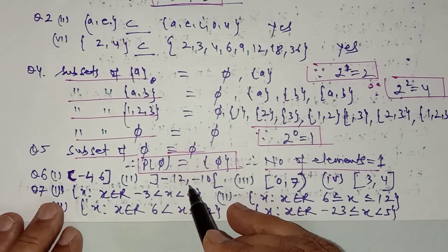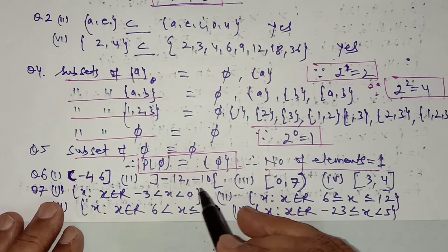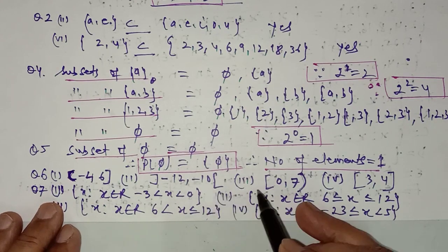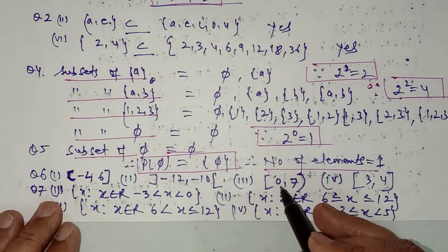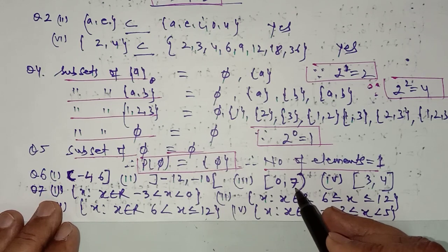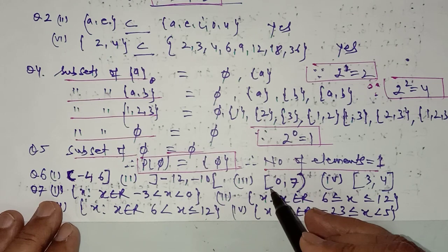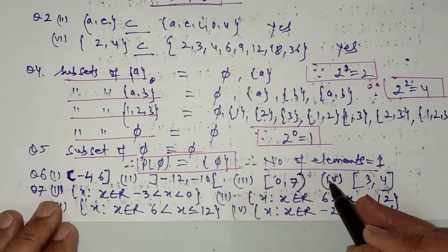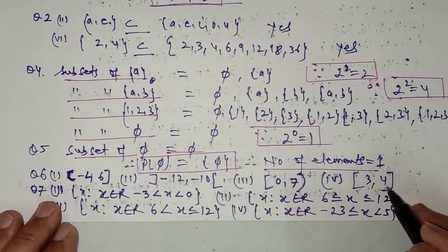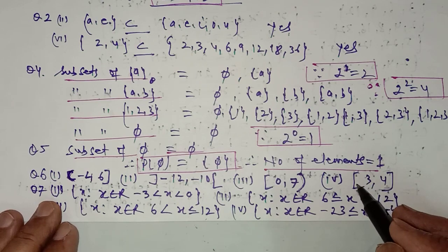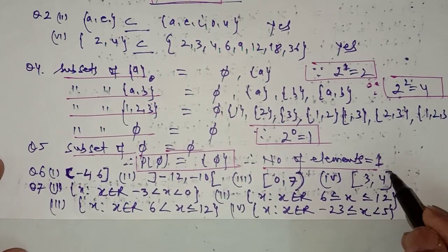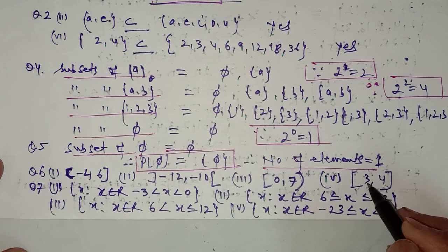In the second part, x is greater than minus 12 and less than minus 10, so we have an open interval for both: (-12, -10). In the third part, x is greater than or equal to 0 and less than 7, so we have a closed interval at 0 and an open interval at 7: [0, 7). In the fourth part, x is greater than or equal to 3 and less than or equal to 4, giving the closed interval [3, 4].